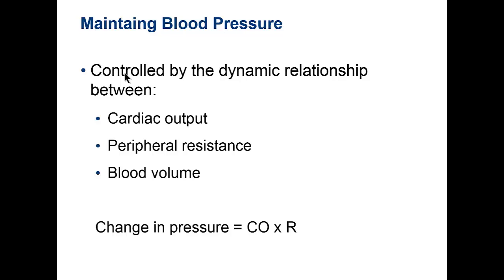Blood pressure is the force exerted on the walls of a vessel — on venous, arterial, or capillary walls. It's influenced by cardiac output — the amount of blood leaving the heart. If you have a high cardiac output, blood pressure increases. Peripheral resistance — related to afterload — also affects blood pressure. If there's a lot of resistance from blood clots, narrowed vessels, or extra blood volume, blood pressure goes up.